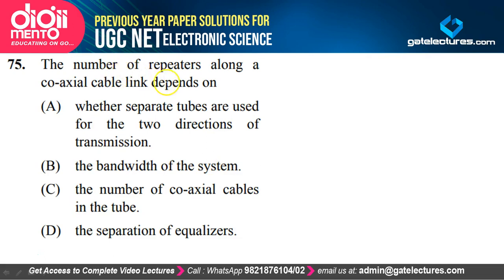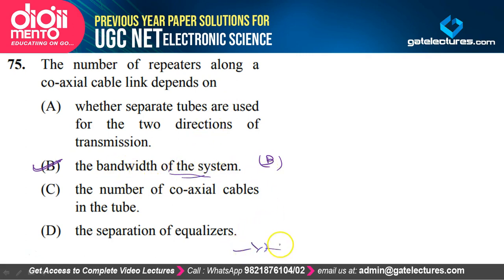The number of repeaters along a coaxial cable link depends on the bandwidth of the system — option B is correct. How many repeaters you place in the coaxial cable link depends only on the bandwidth of the system. This ends Paper 3, June 2013, Electronic Science.